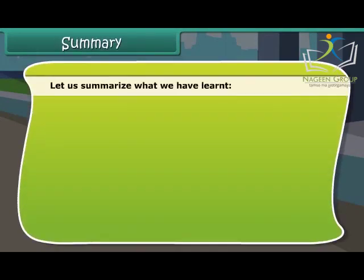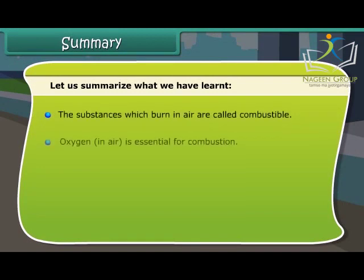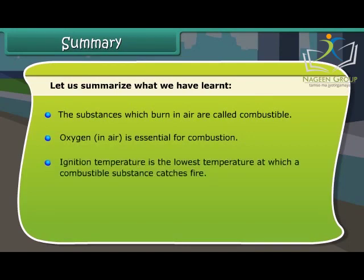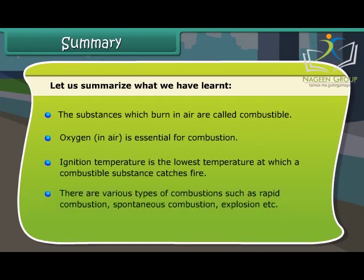Let us summarize what we have learned. Substances which burn in air are called combustible. Oxygen in air is essential for combustion. Ignition temperature is the lowest temperature at which a combustible substance catches fire. There are various types of combustion such as rapid combustion, spontaneous combustion, explosion, etc.